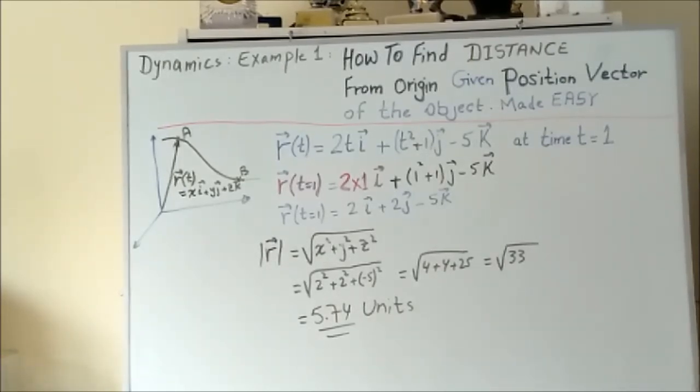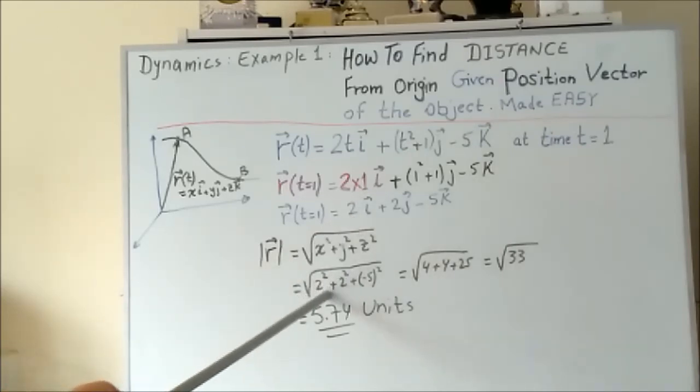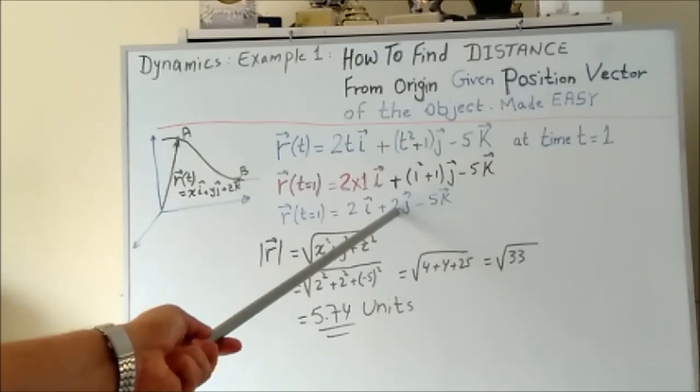This equals √(x² + y² + z²). Now x here is 2, so we have 2²; y is 2, so plus 2²; and z is -5, so plus (-5)².